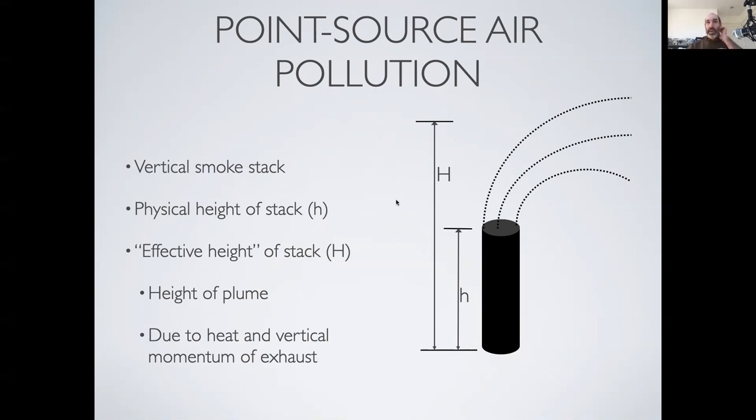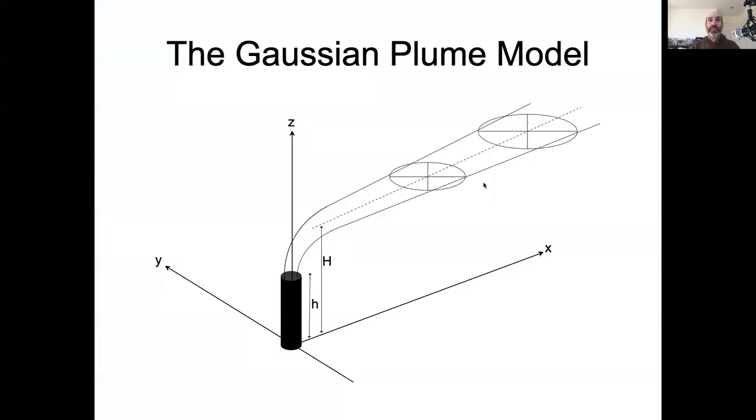So that introduces conceptually this idea of the Gaussian plume model, a model for predicting pollution concentrations of a pollutant coming out of a point source with some height as a function of downwind direction, lateral direction, and vertical dimension. In the next set of videos, we're going to dive into the actual math for how this model works. Thanks.